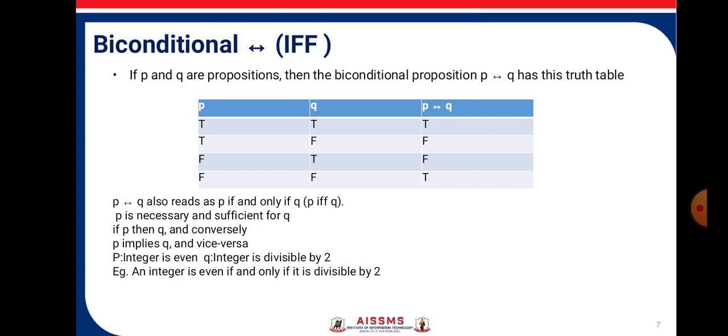Consider the statement: p is 'integer is even,' q is 'integer is divisible by 2.' The example: 'an integer is even if and only if it is divisible by 2.'